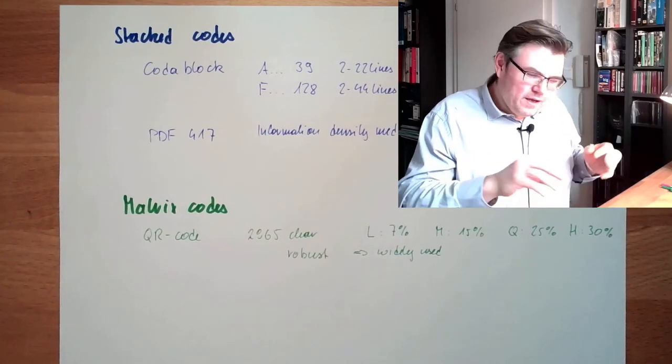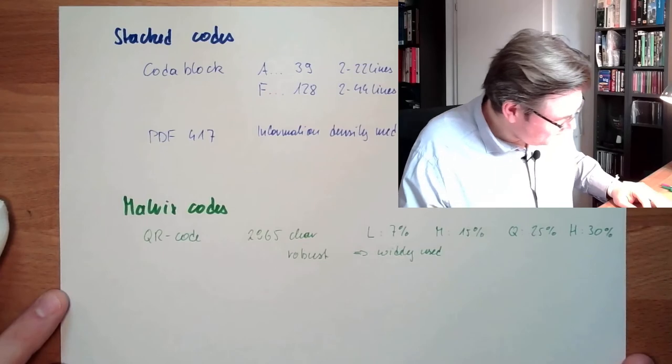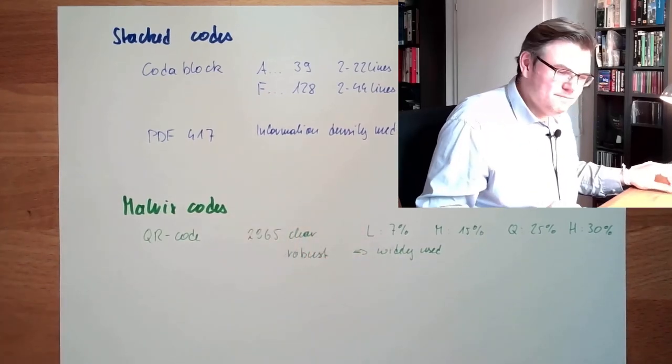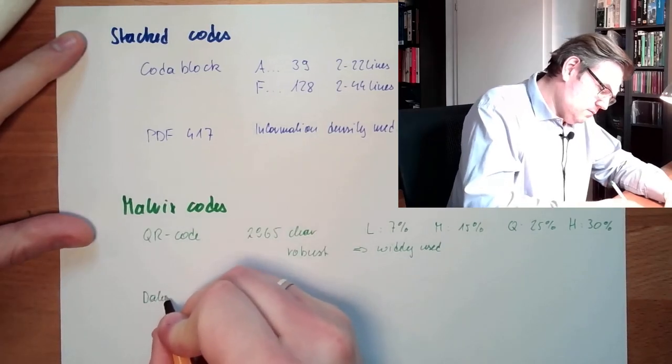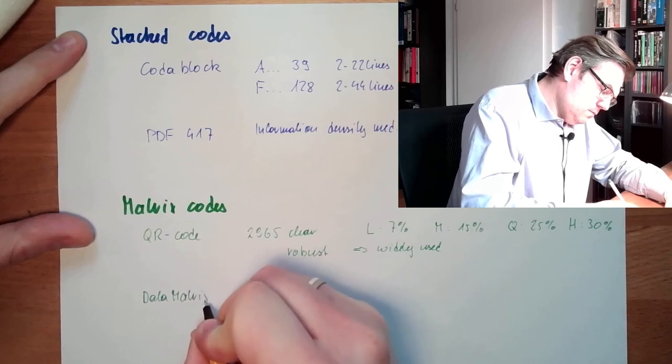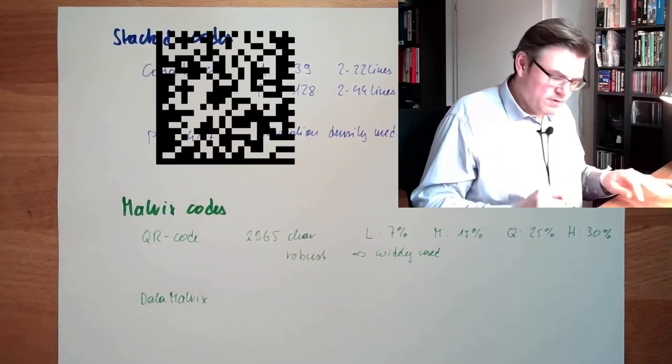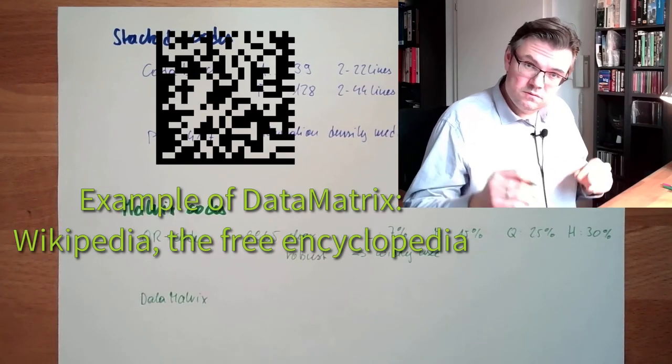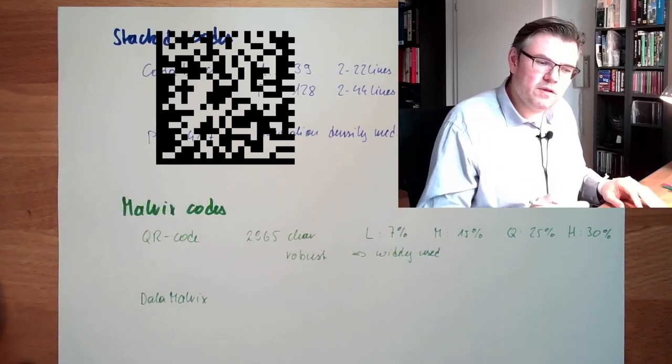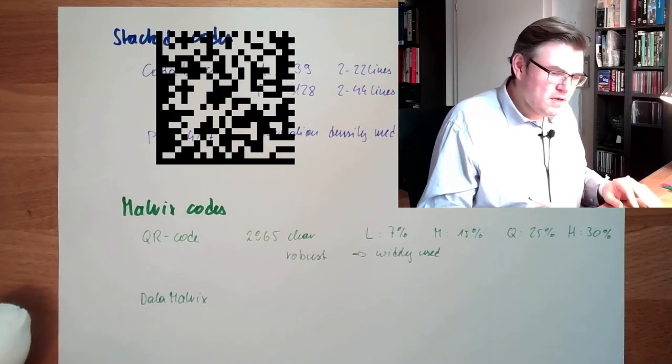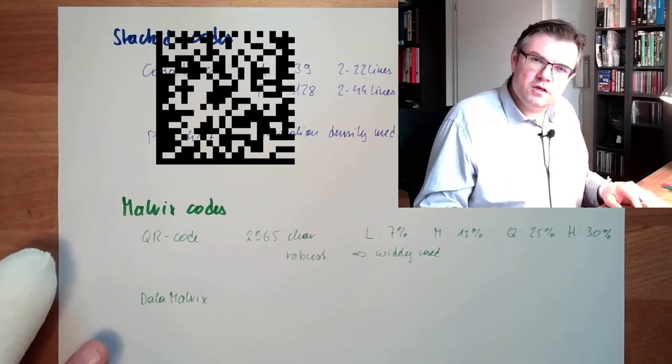Another quite known matrix code is the Data Matrix. Pupils at hotels and Burton know this Data Matrix because our classroom laptops are marked with Data Matrix code. There is a little sign on them with Data Matrix code. This Data Matrix is gaining more and more importance. It was developed in the USA by Acuity Corporation.